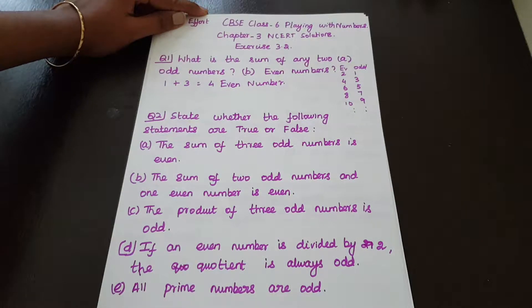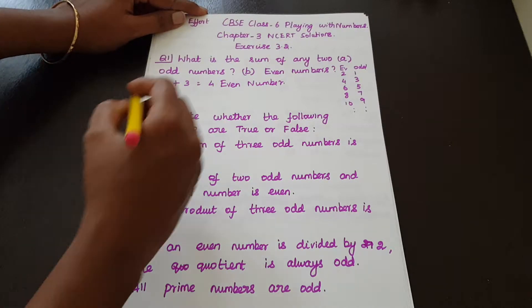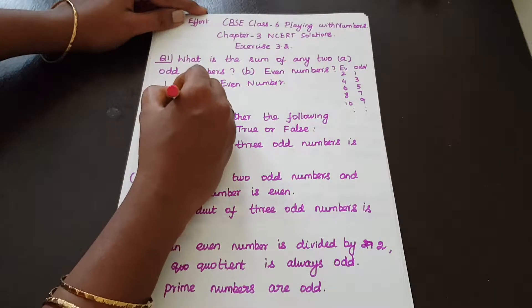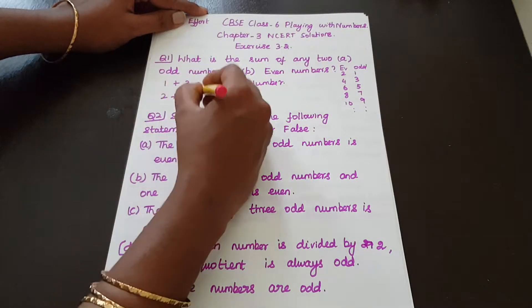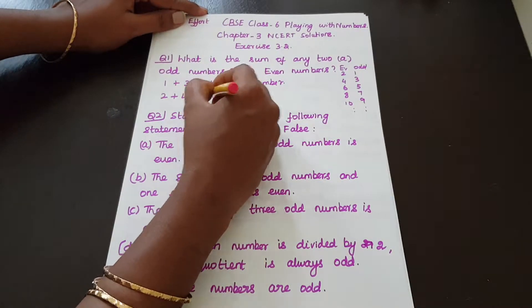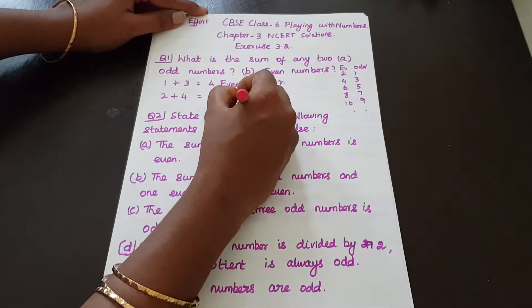Even number. So, any two even numbers added together: 2 plus 4 equals 6. And 6 is also an even number. So the sum of any two odd numbers is even, and the sum of any two even numbers is also even.